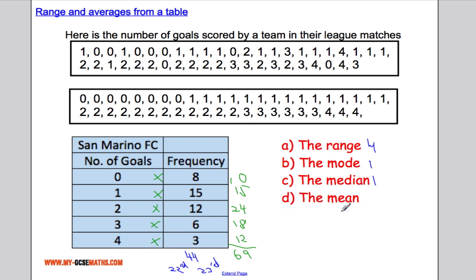So to work out the mean now, I'm going to do 69 divided by the total frequency. 69 divided by 44 gives me 1.57. So the mean is 1.57.